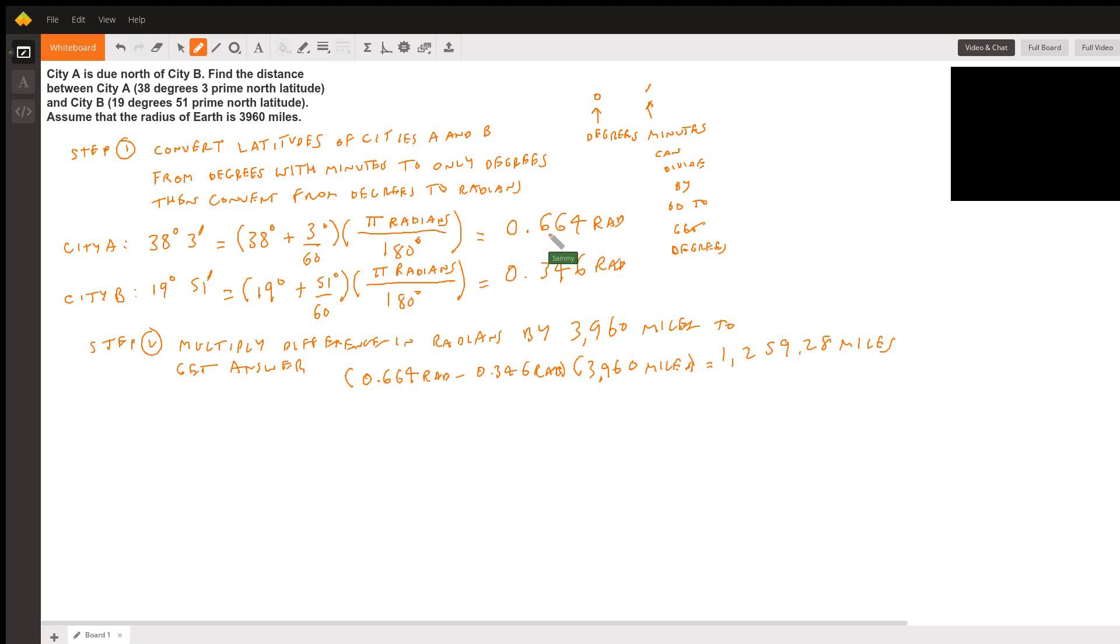City B: we have 19 degrees 51 minutes, so we have 19 degrees plus 51 over 60 degrees, and everything is in degrees times pi radians over 180 degrees. The degrees will cancel out and we'll get radians. We multiply these numbers together and we're going to get 0.346 radians.